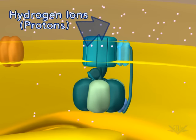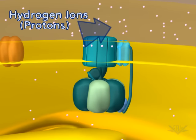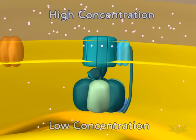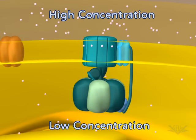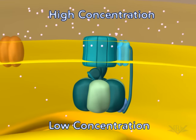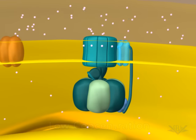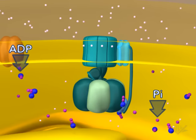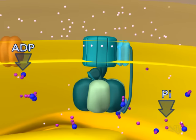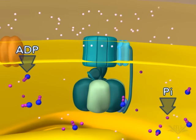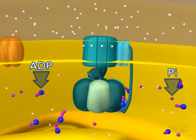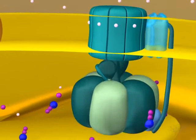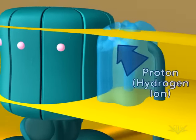Notice the large difference in the number of hydrogen ions on the two sides of the membrane. This difference is a hydrogen ion, or proton, concentration gradient. The energy associated with this gradient is used to synthesize ATP from ADP and PI. This occurs at the ATP synthase complex.